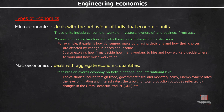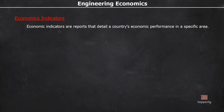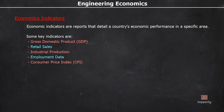The next topic is economic indicators. Economic indicators are reports that detail a country's economic performance in a specific area. Some key indicators are GDP, retail sales, industrial production, employment data, and consumer price index. These are used to determine a country's development. For example, reserve banks issue statements regarding how GDP fell or risen over a quarter or in a year. The growth or deflation of these indicators has major influences on the economy.